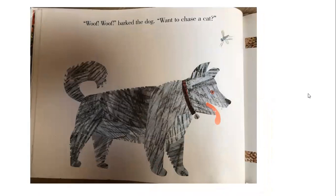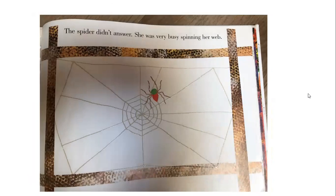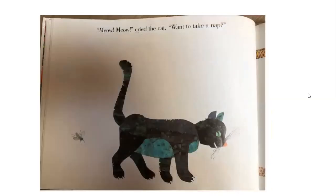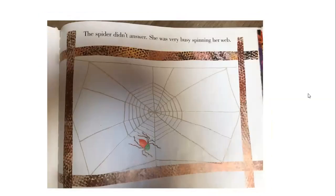"Woof, woof," barked the dog. "Want to chase a cat?" The spider didn't answer. She was very busy spinning her web. Look at the nice job she's doing — making that circle go around and around. "Meow, meow," cried the cat. "Want to take a nap?" The spider didn't answer. She was very busy spinning her web.